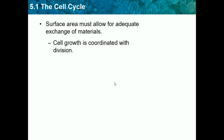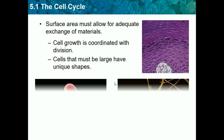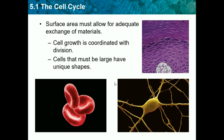Cell growth is coordinated with division. Cells that must be large have unique shapes. Here are some pictures of cells — these are red blood cells, and these look like nerve cells.